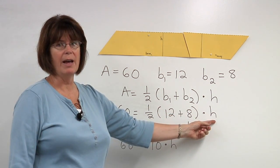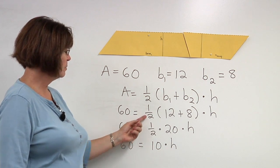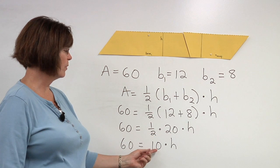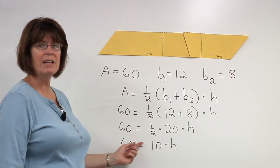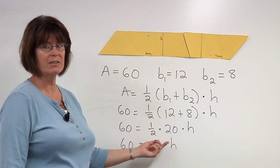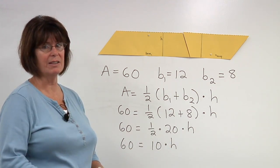We're trying to figure out the height. This becomes 12 plus 8, 20, half of 20 is 10, so 60 equals 10 times the height. 10 times 6 is 60, so the height is 6.